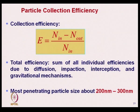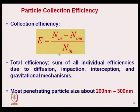Collection efficiency is (N_in − N_out) / N_in. Total efficiency is the sum of all individual efficiencies due to diffusion, impaction, interception, and gravitational mechanisms, so this efficiency includes all the capture mechanisms.